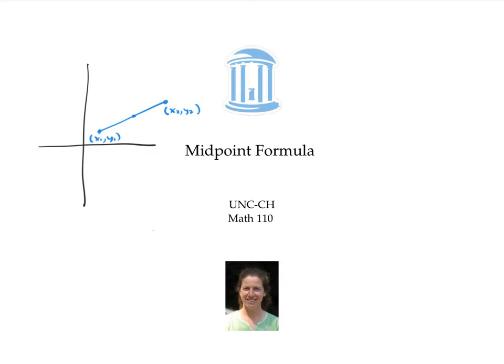The x-coordinate of the midpoint is going to be exactly halfway between the x-coordinates of the endpoints. To get a number halfway between two other numbers, we just take the average.